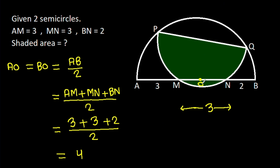And OM, it will be 4 minus 3, that will be 1. And ON, it will be 4 minus 2, that will be 2.